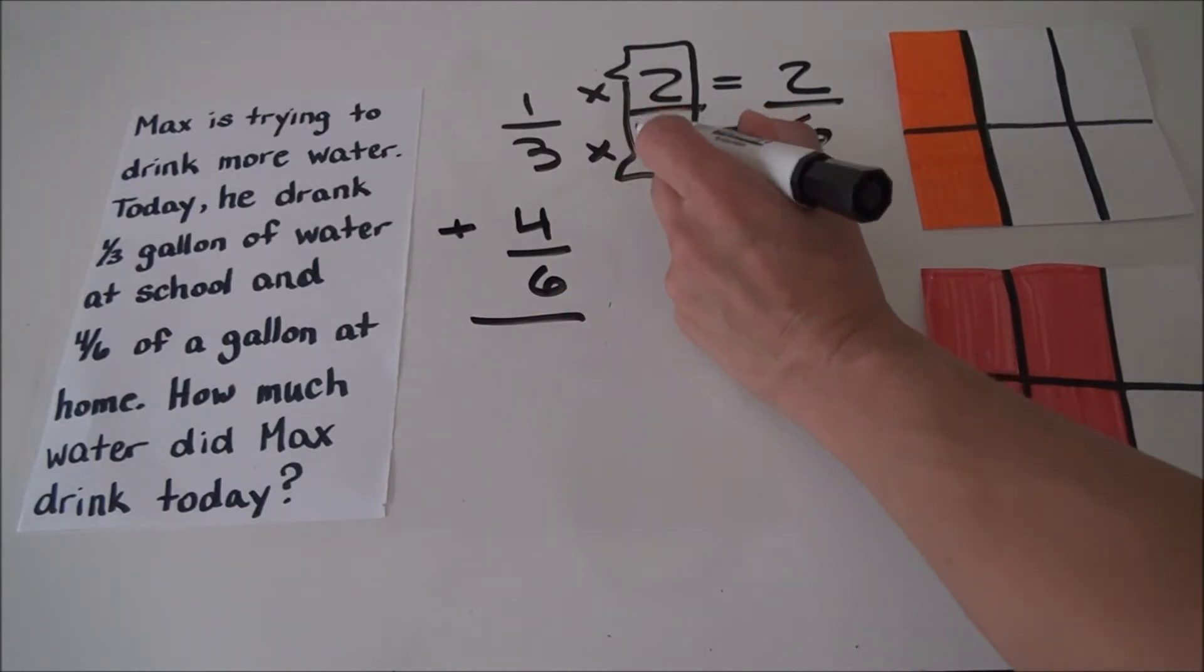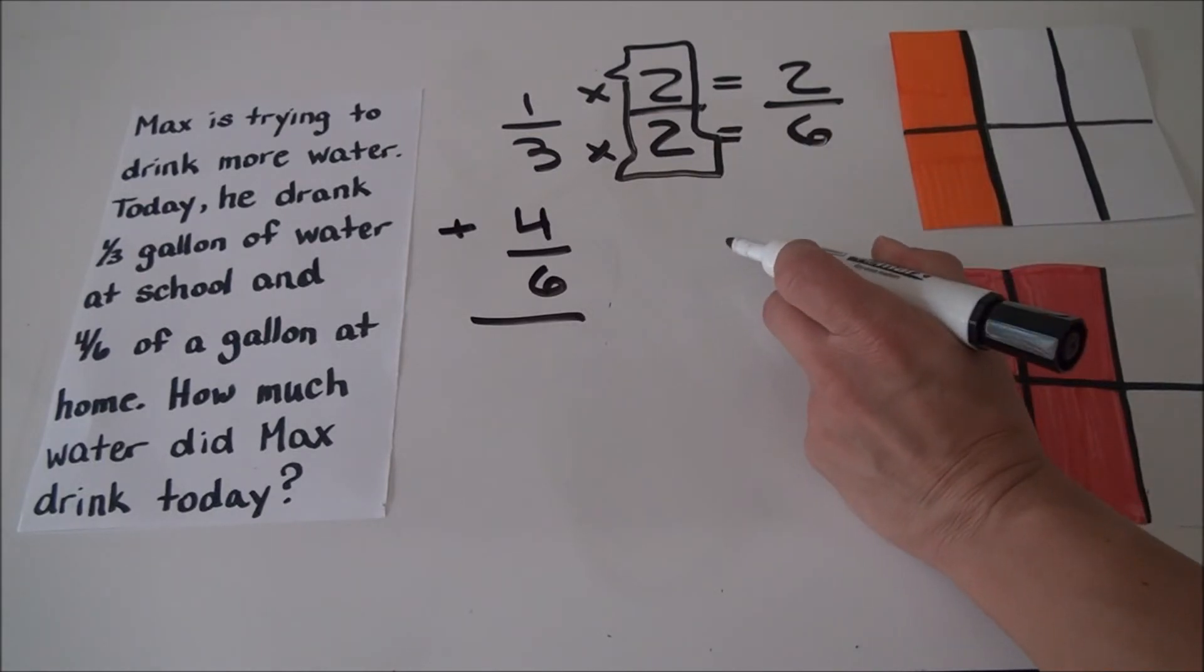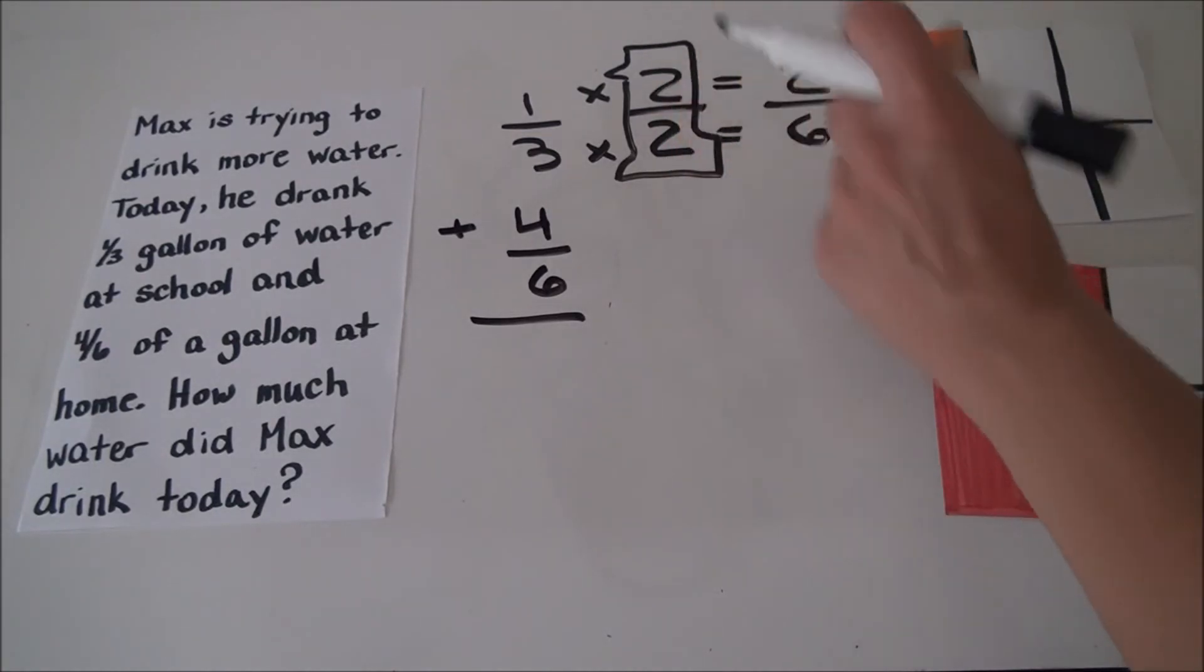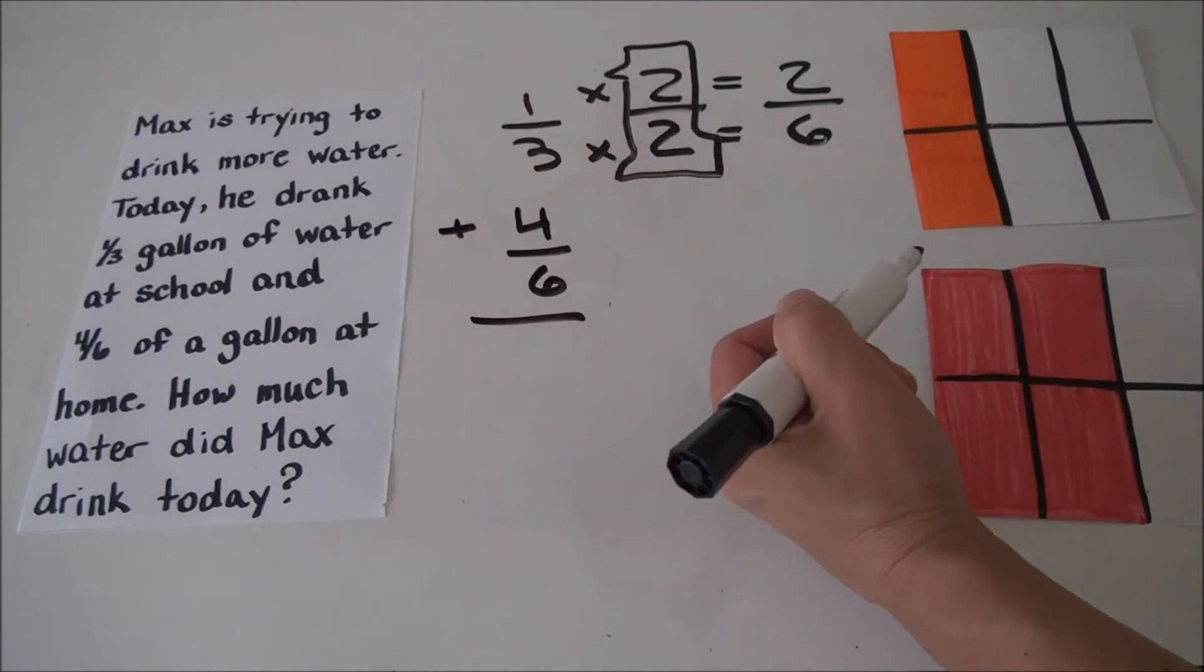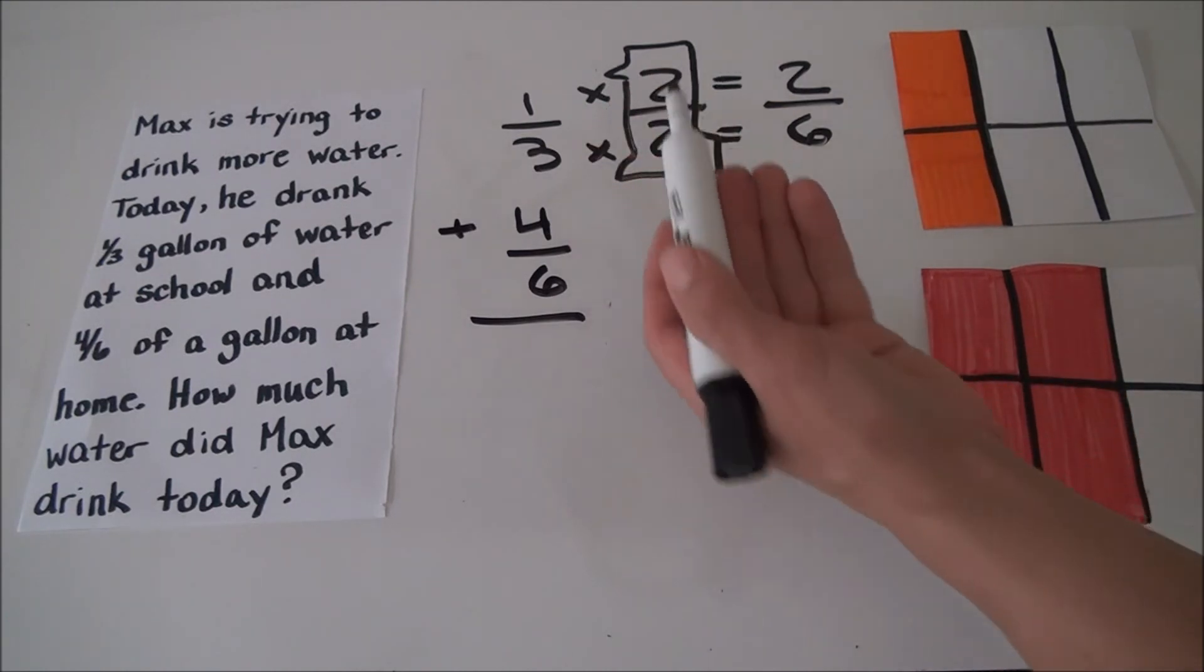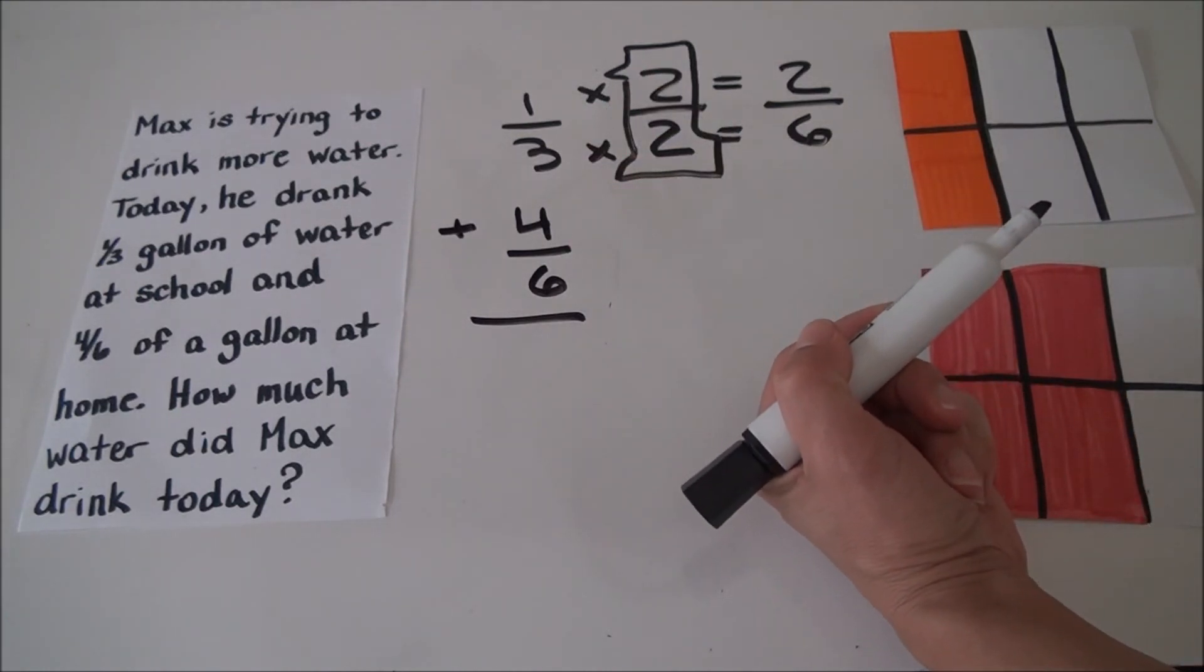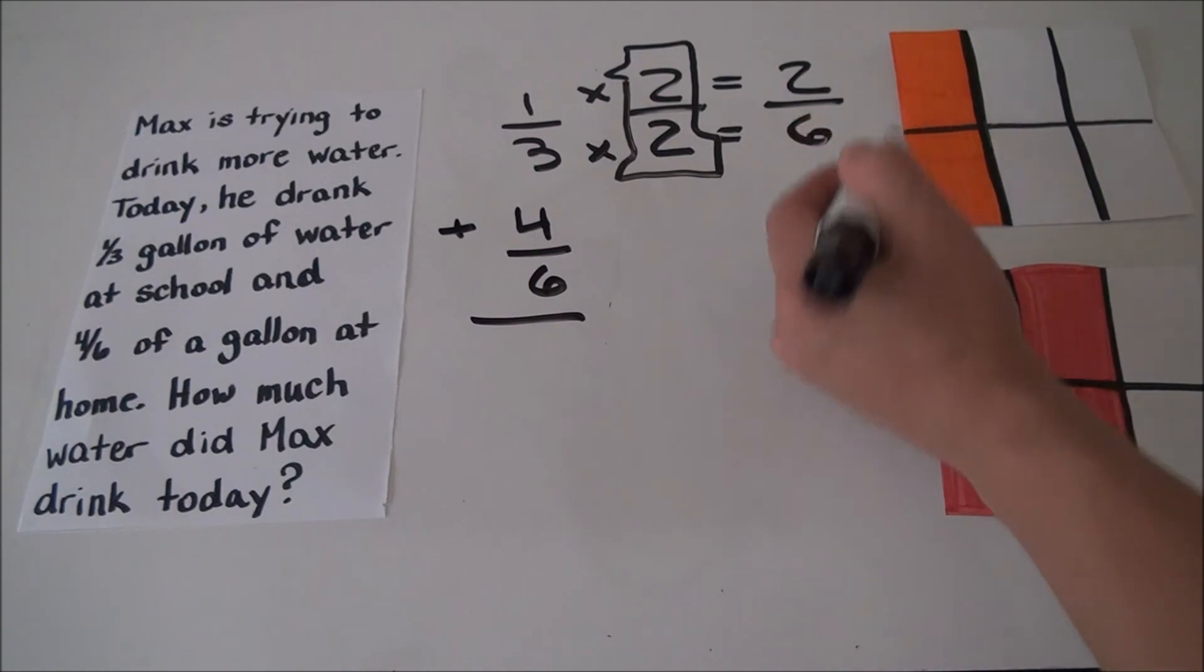Therefore when we multiplied by two-halves, we were really just multiplying by one. We know that any number multiplied by one is equal to that original number. Therefore, when we multiplied by two-halves, or one, it changed the look of the fraction, but it didn't actually change its value.